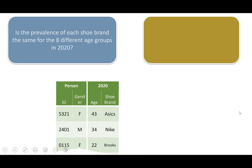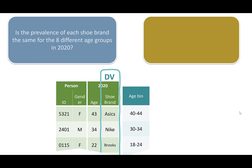So now we're looking at the question: is the prevalence or distribution of each shoe brand the same for eight different age groups in 2020? Our dependent variable is still the same — the shoe brand type. But now we're saying we want to take age and put it into eight different bins, based on maybe the race categories at that race. One of our first steps in our stats package or spreadsheet is to actually assign each age value from the raw data into a bin. Now these bins are ordinal — in order — but we can treat them as categories to say: is the distribution of shoes in each of these eight bins similar or not?